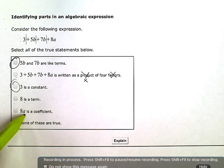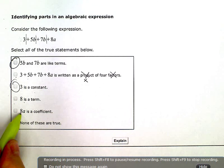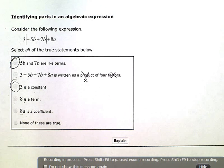8a is a coefficient. Well, the coefficient is just the number attached to the variable. The coefficient is 8. But 8a, the whole thing, is not a coefficient. So this one's out. And none of these are true - that one's out because we did have two true statements here.